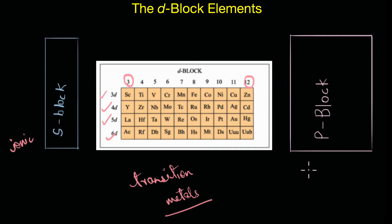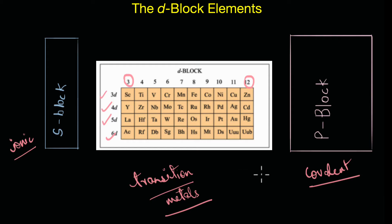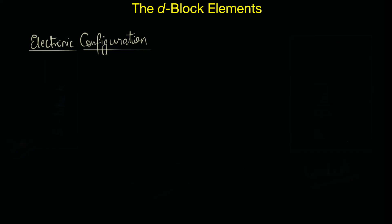Depending on the oxidation state of the transition metals, the type of bonding in these metals can range from ionic to covalent bonding. Another interesting thing is that not all of the d-block elements can be referred to as transition metals — there are a few exceptions, which we will discuss shortly.